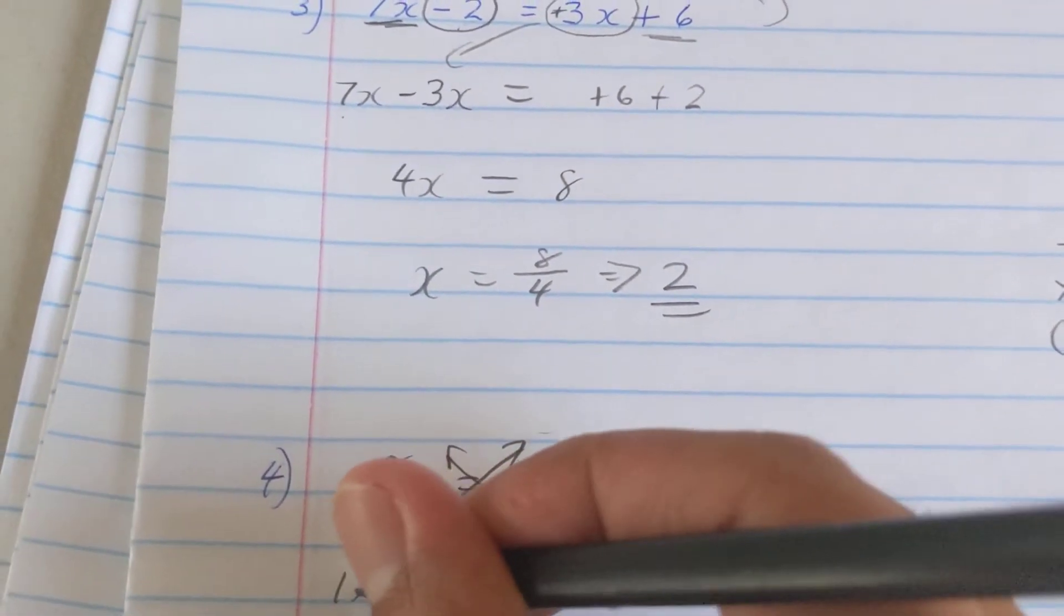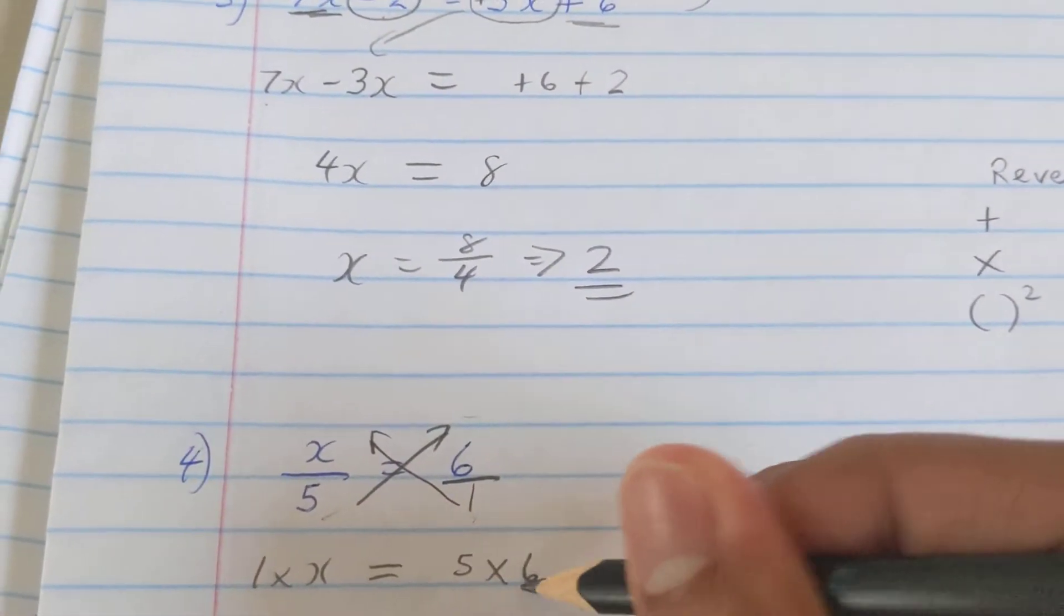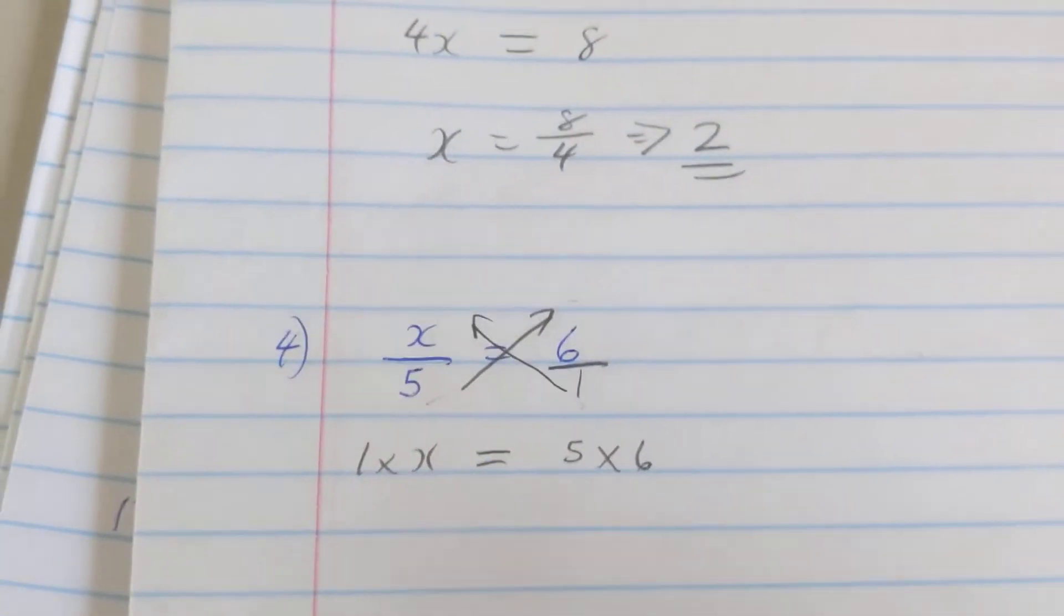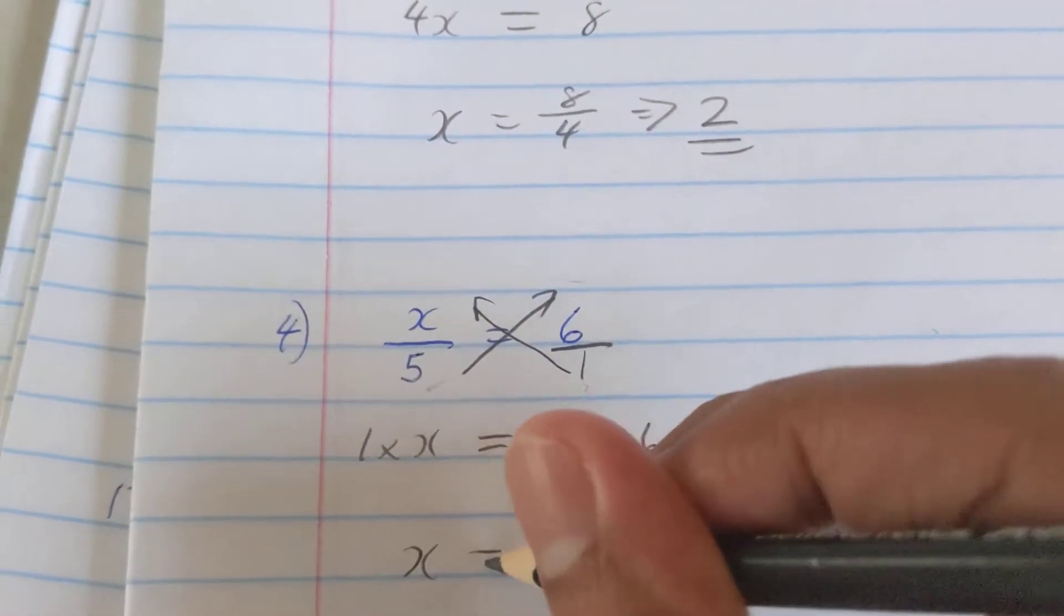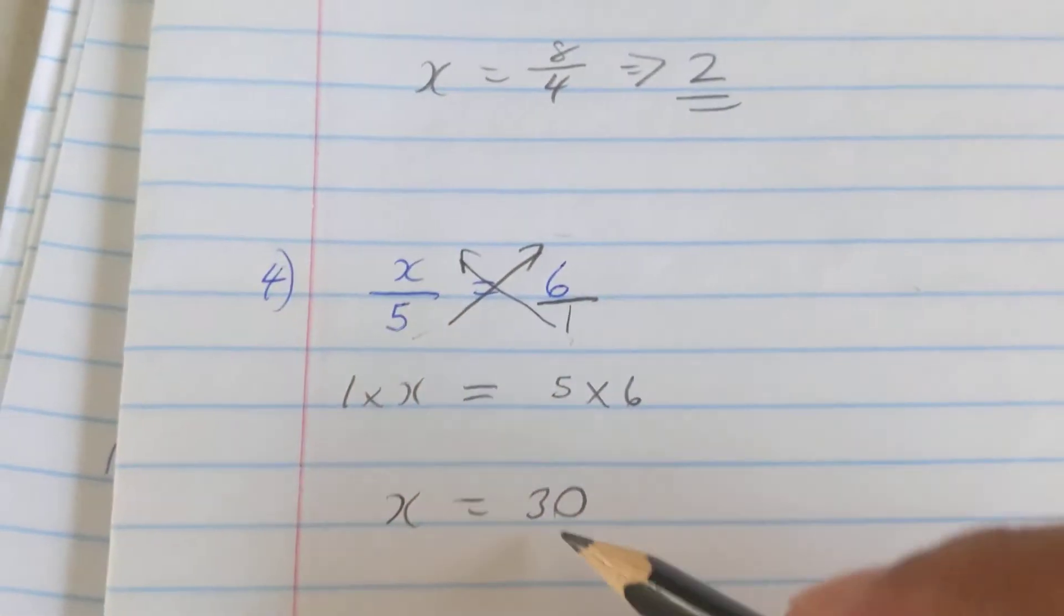I multiply those two numbers together, and then I multiply these two numbers together, 5 times 6. Usually we write it back. Sometimes I could do it in your head. So 1 times x gonna be x, 5 by 6 is 30.